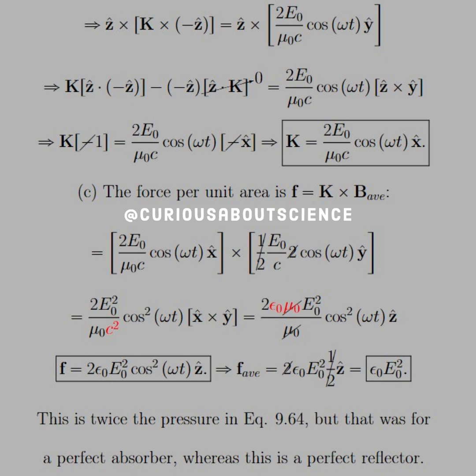Now, (c), the force per unit area is f equal K cross B average. Well, if we're looking at the average field, we just take the field that we found in part a and multiply, part a multiplied by half, since we know that the average field will condense to two copies of it, and then we get rid of it.